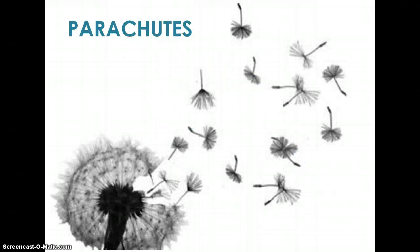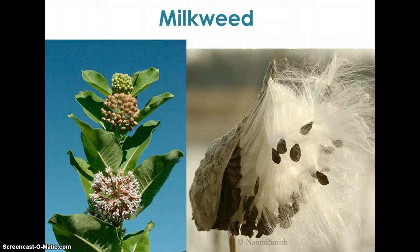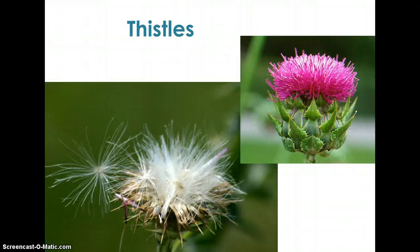Another way seeds are dispersed is by the wind, and seeds dispersed by wind come in a variety of shapes. The first is the parachute shape — the little seeds of the dandelion actually look like miniature parachutes, which allows them to be picked up by the wind and carried some distance. Milkweed also uses this parachute approach, with a fluffy parachute-like appendage attached to the brown seed. Thistles also use this method of dispersal.